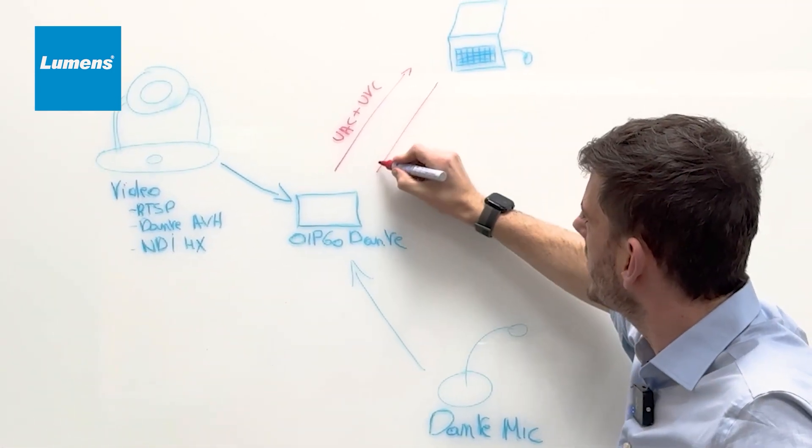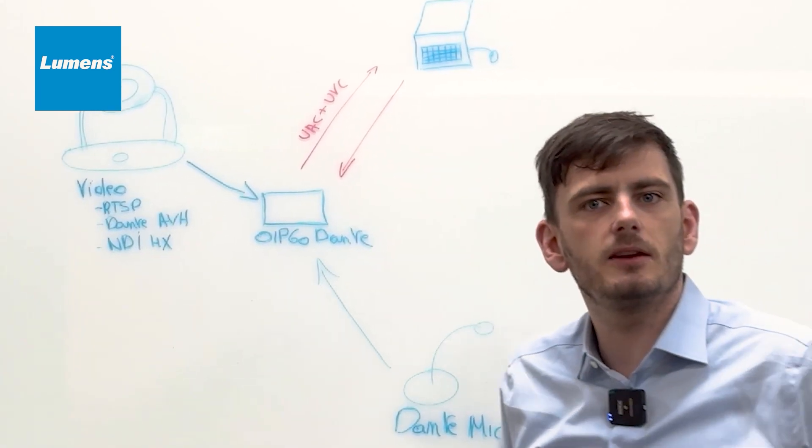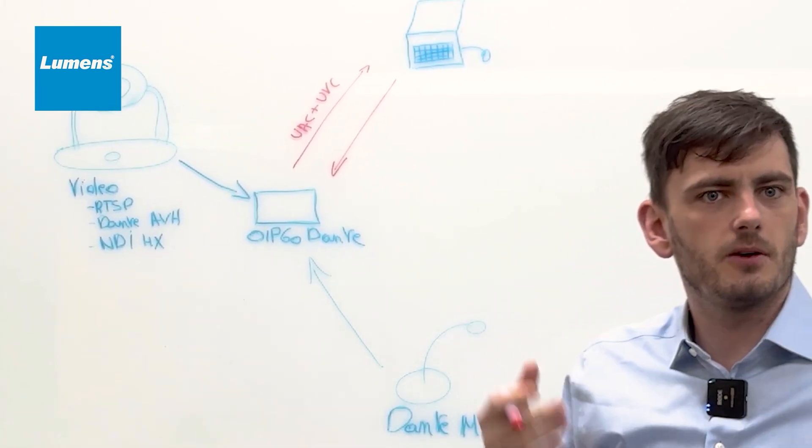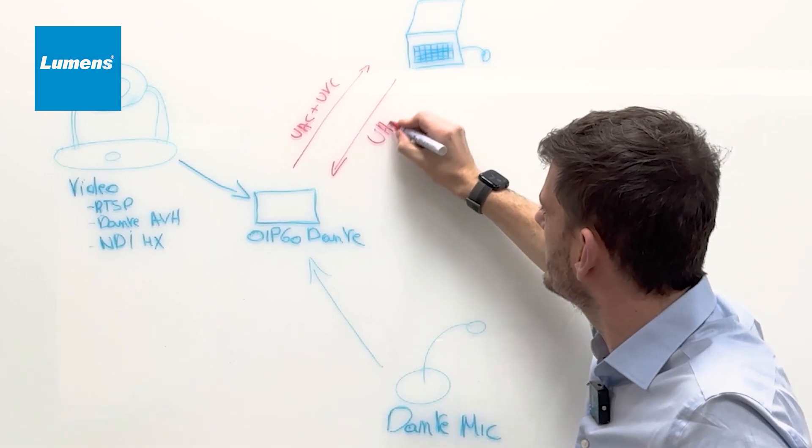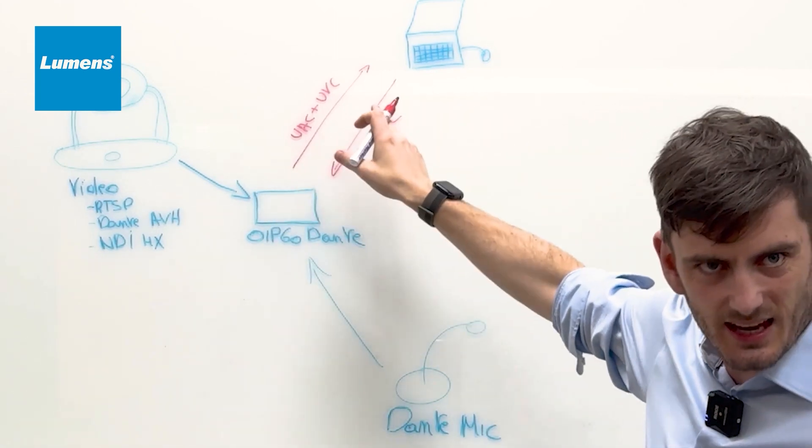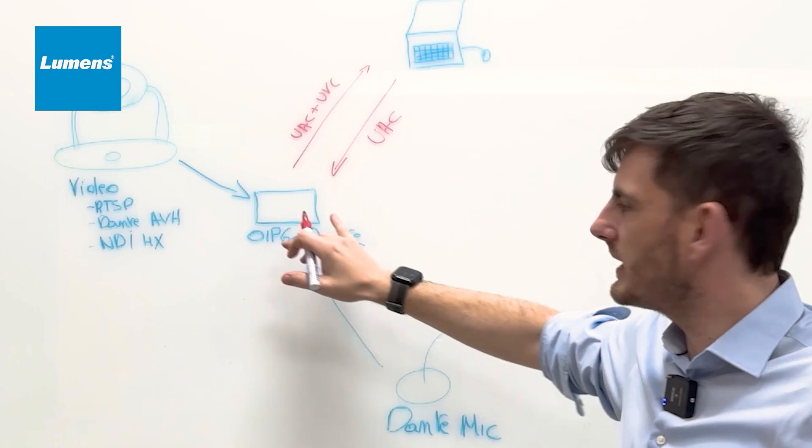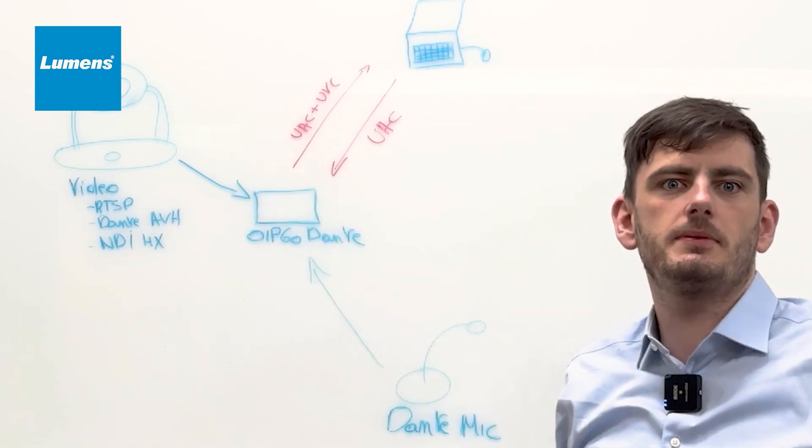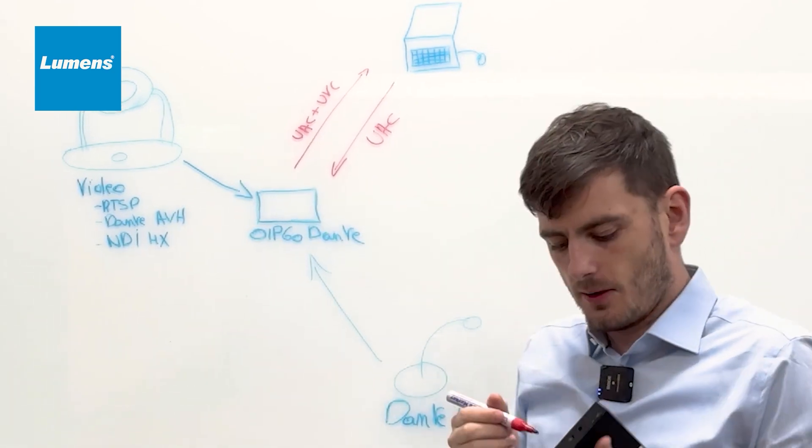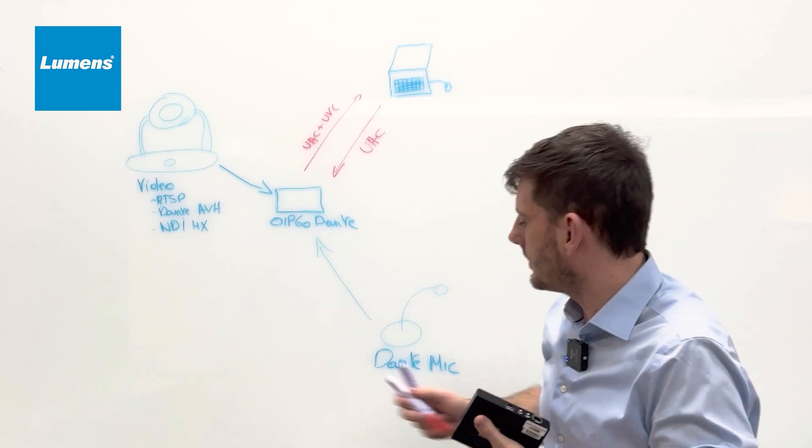What we can do is we can take back, let's say you are in a Teams call, you are in a meeting. We can take back the UAC sound with the same USB cable and bring that back into the OIP60D Dante and what we then do is we can send that sound.